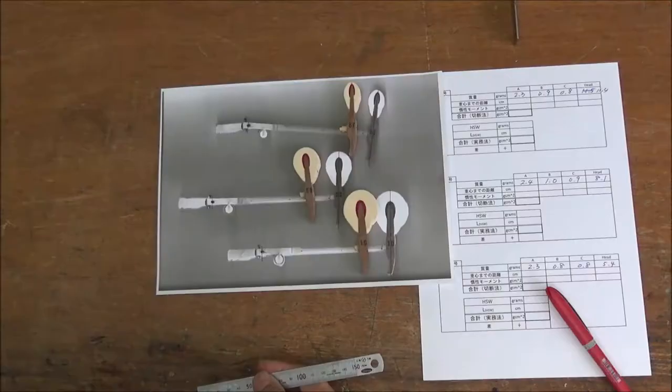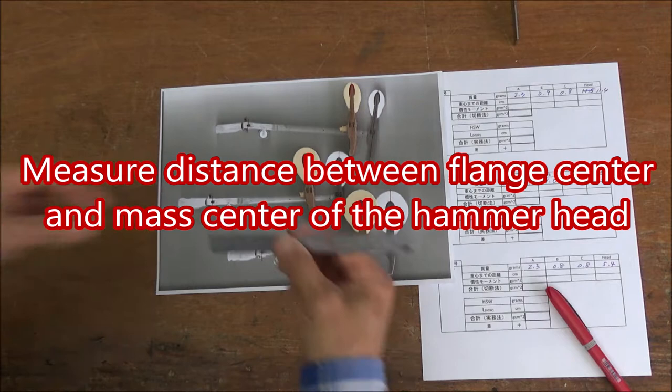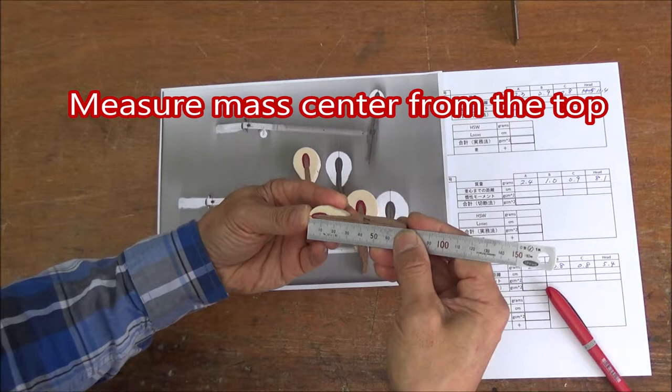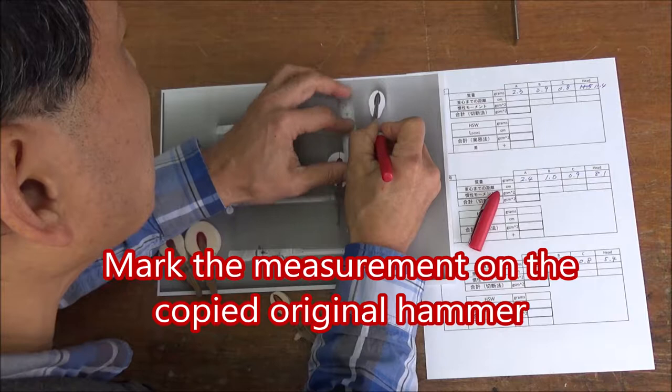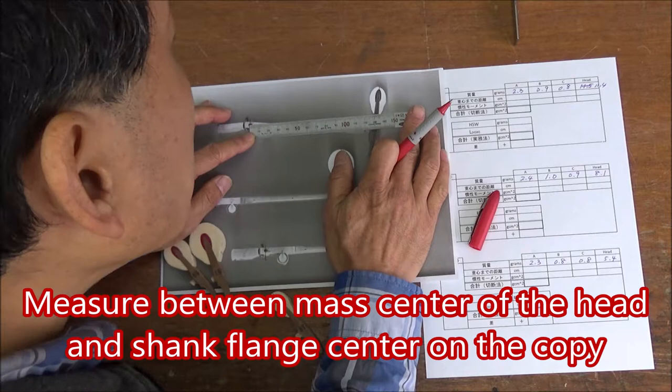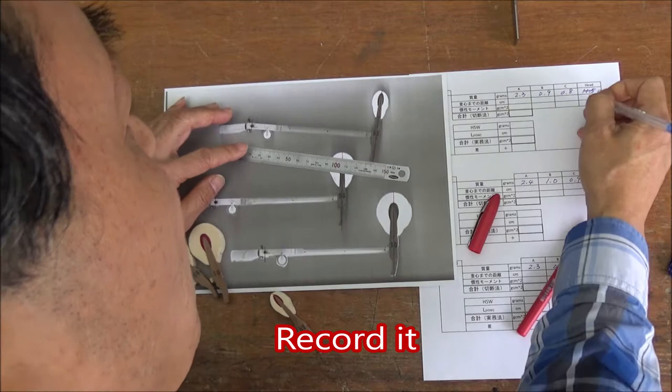Now we are measuring distance between the flange center and mass center of the hammerhead. First, measure the mass center from the top of the hammer. Then mark that measurement on the copied original hammer. Measure between the mass center of the head and shank long center on the copy. Record that measurement. And the same for the other two hammers.